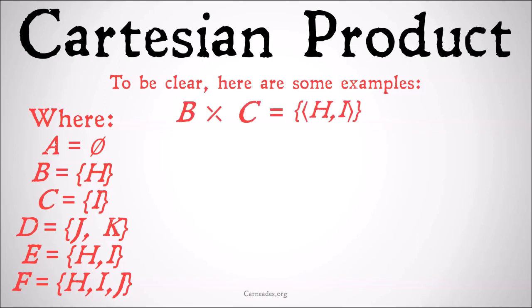B times C is equal to the class whose only member is the ordered pair H, I, because B only has one member H and C only has one member I, so there's only one possible combination of those, H, I.